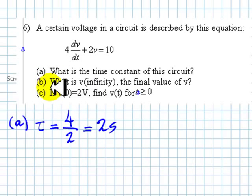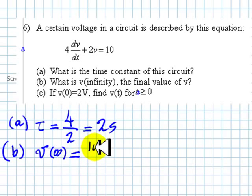Question B, what is the voltage at infinity, the final value of V then? At infinity, the value is 10 divided by 2. We also saw that in class. The final value of that voltage is 10 divided by 2, 5 volts. That's good.